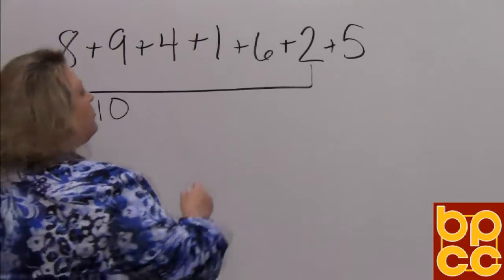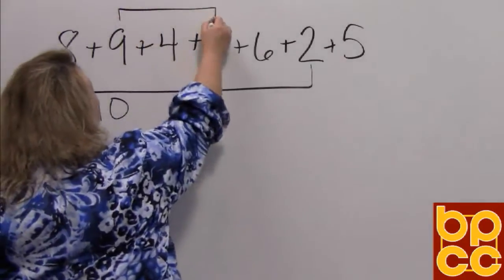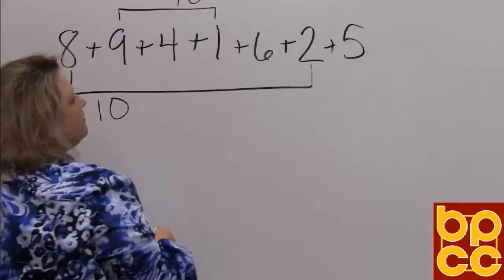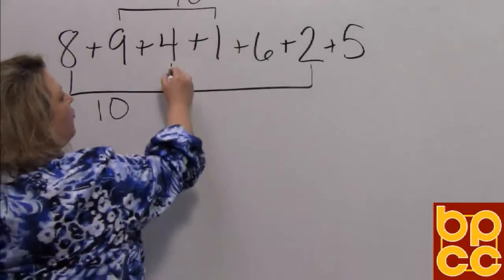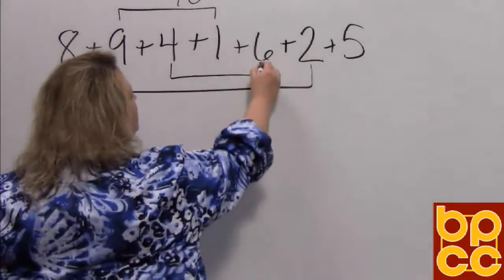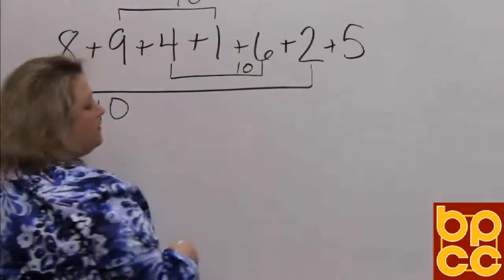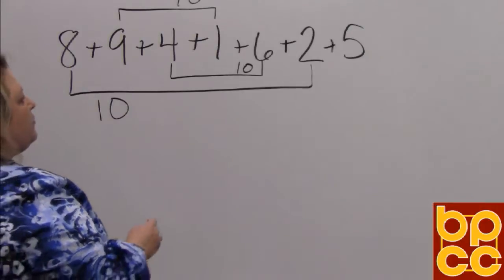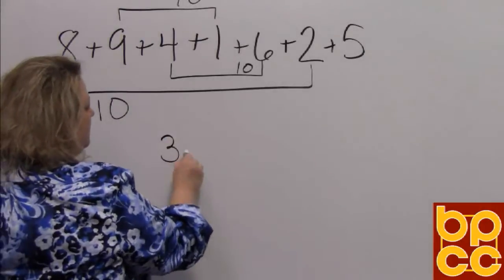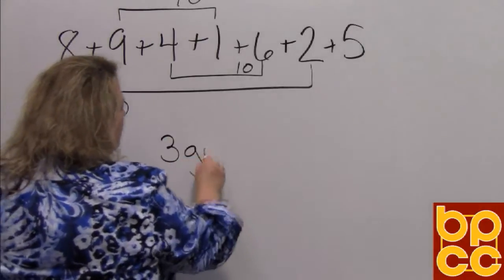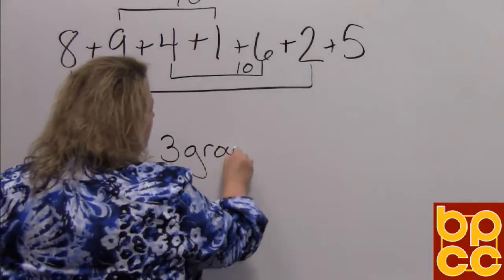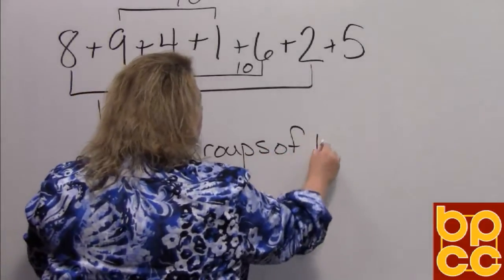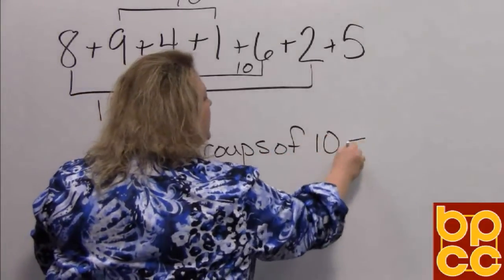Our next group would be nine plus one — ten. That makes another group of ten. Four plus six makes another group of ten — ten. So what we have done is made three groups of ten, which equals thirty.